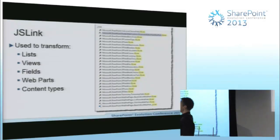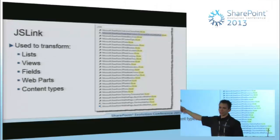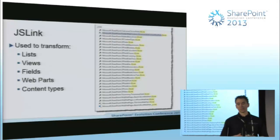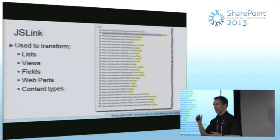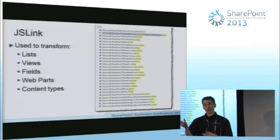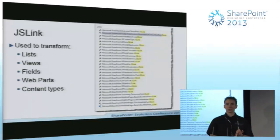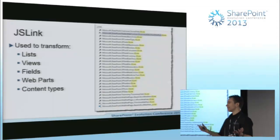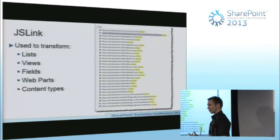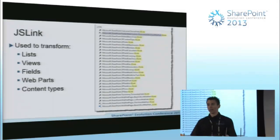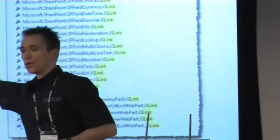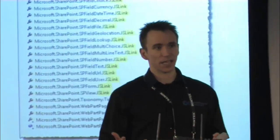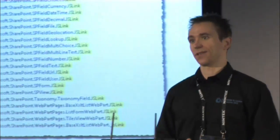This particular idea of using JSLink for a field — maybe in 2007 or 2010 you developed custom field controls. It was quite a complex task. Maybe in edit mode you entered a postcode, but in display mode you displayed a map. Consider that custom field controls required a lot of code and were a farm solution — you can't do that kind of thing on Office 365. Office 365 is very important to Microsoft, so this approach is the new way of doing things, and everything we're looking at today works in Office 365 and on-premises.